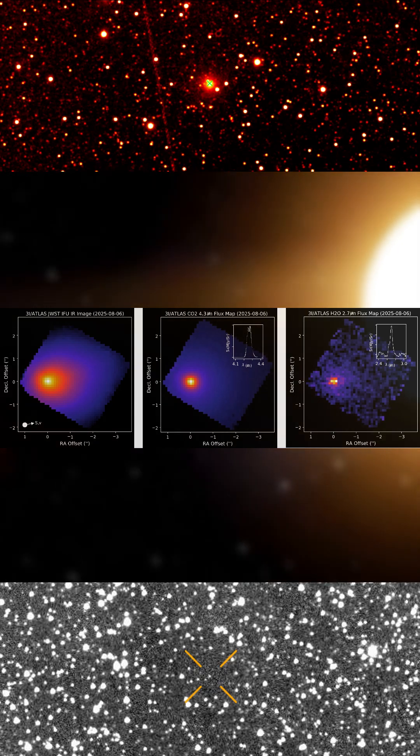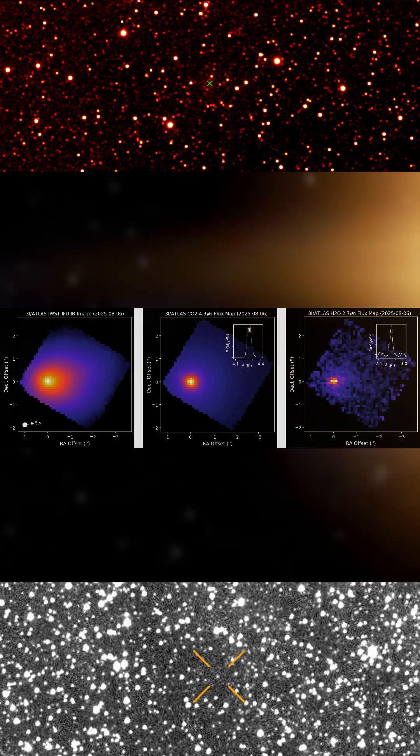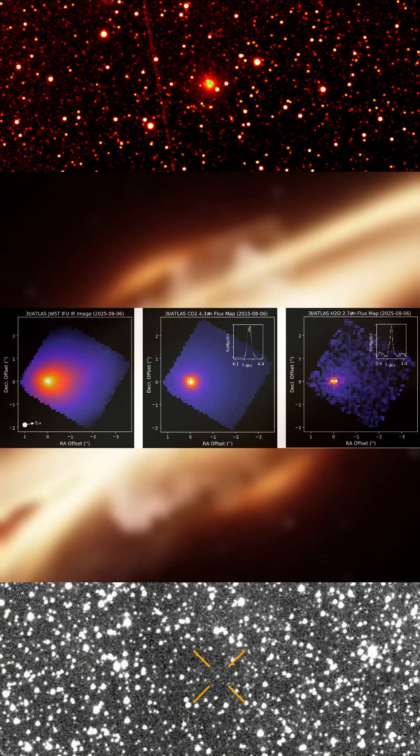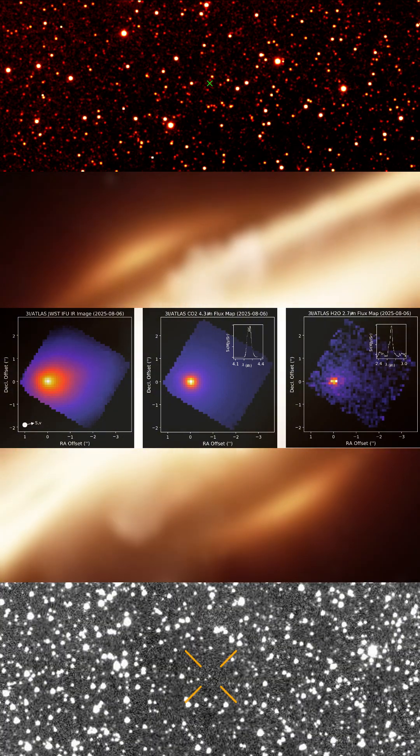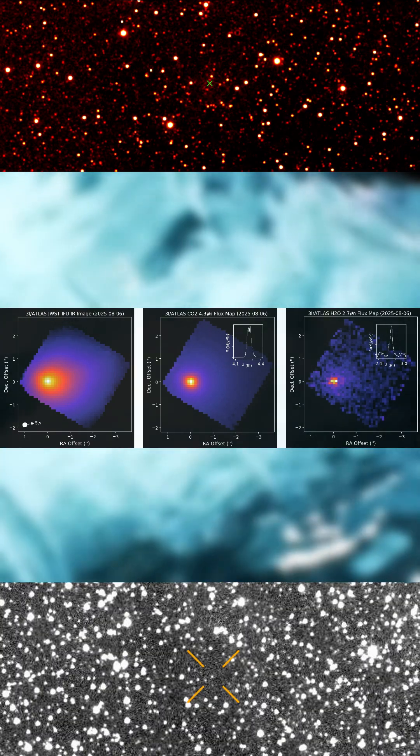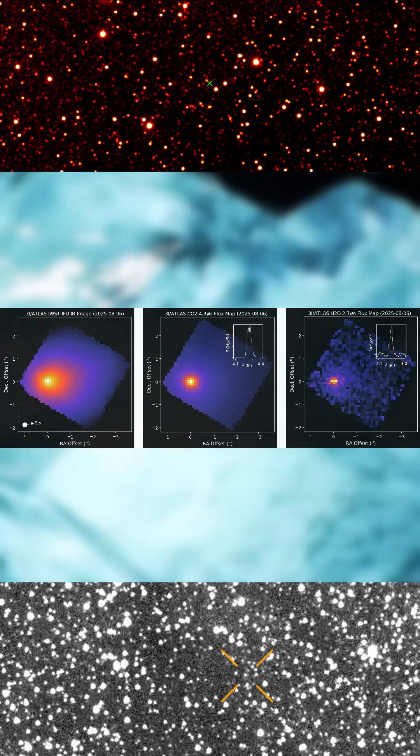Webb also recorded water ice grains with an unexpected signature. The three-micron band appeared strong, while the 1.5 and 2-micron bands were weak or absent. That points to very fine or amorphous ice grains not typically seen in solar system comets.